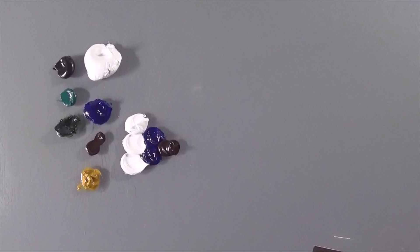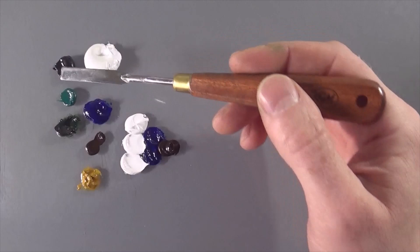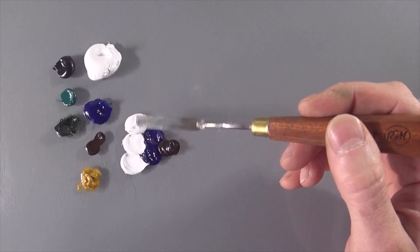Now the gray is going to be three parts titanium white, two parts permanent blue, and one part burnt umber. I'm going to mix those together.